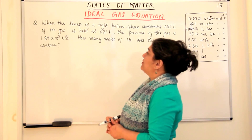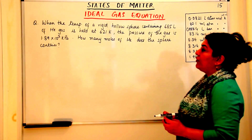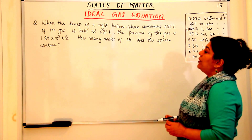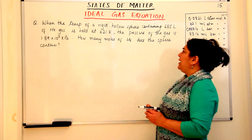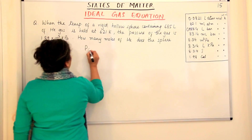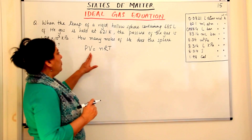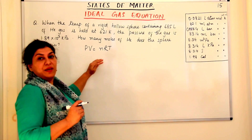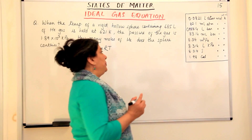Let us start with solving the problems. When the temperature of a rigid hollow sphere containing 685 litres of helium gas is held at 621 Kelvin, the pressure of the gas is 1.89 × 10³ kilopascals. How many moles of helium does the sphere contain? We know the ideal gas equation is PV = nRT, so we have five quantities: pressure, volume, number of moles, the value of R, and T. Four are given and one is to be found.